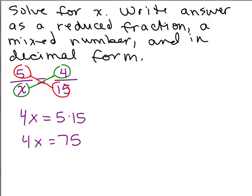And then we'll just divide both sides by 4 to solve for x. And that does not reduce. So the reduced form is just what you see, 75 fourths.